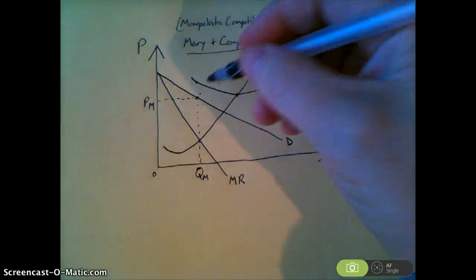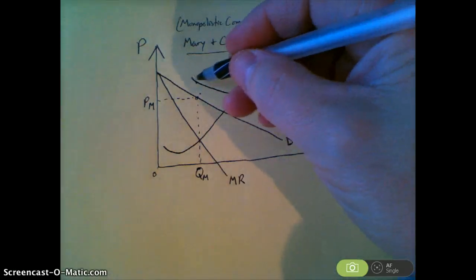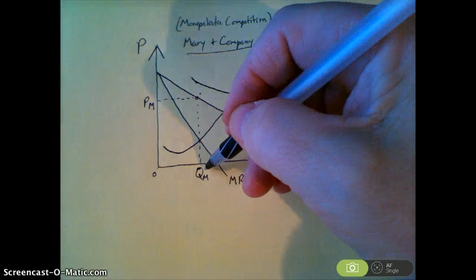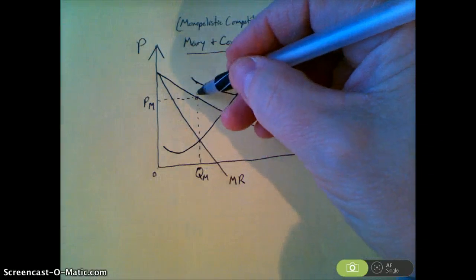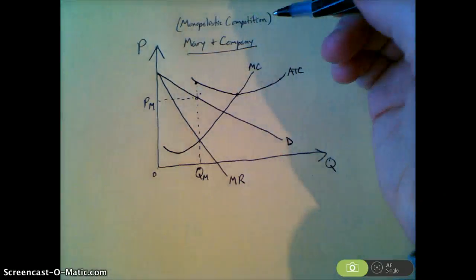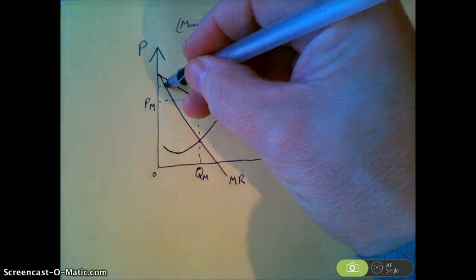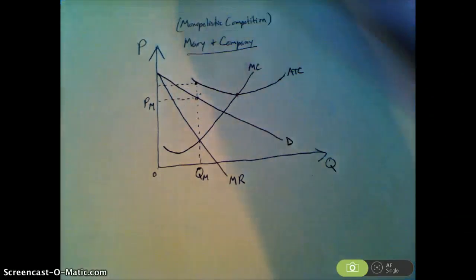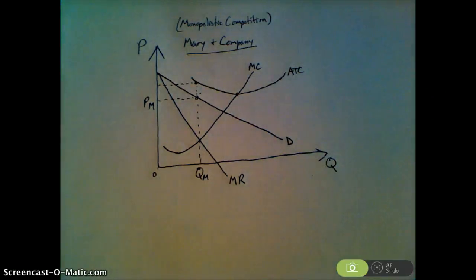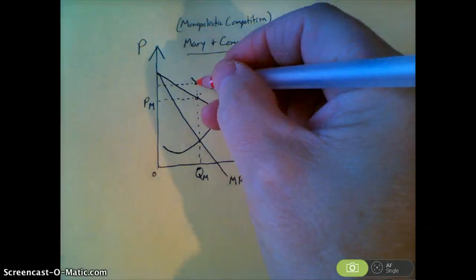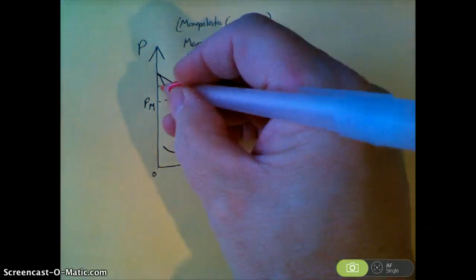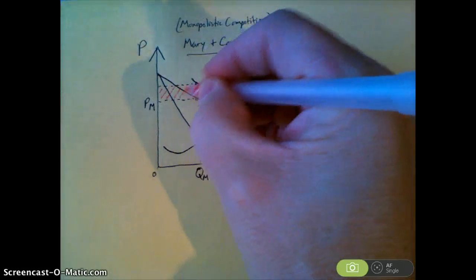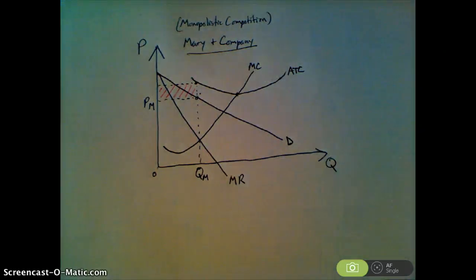So now I'm going to say, here's the ATC for Mary and Company. And the cost to Mary and Company of producing quantity QM is going to be read off of the average total cost curve. Now, since that cost is greater than the price at QM, the cost is higher than the price, this area represents the area of economic losses for Mary and Company.